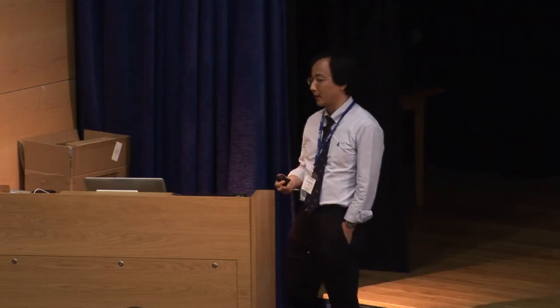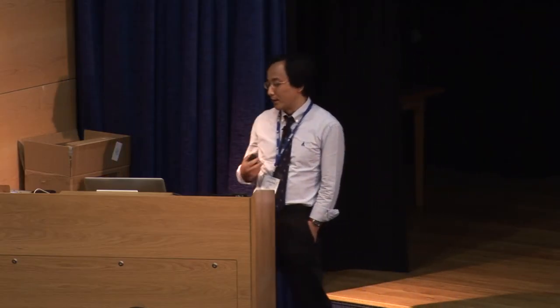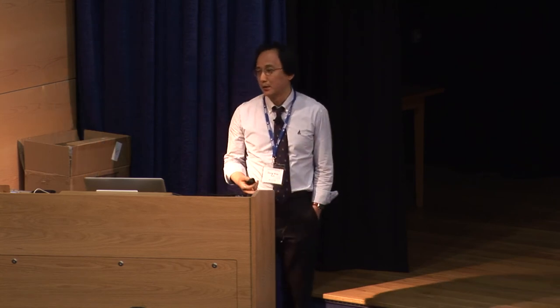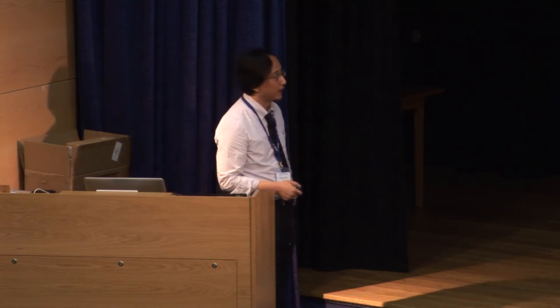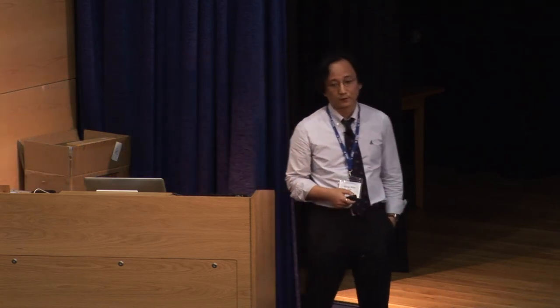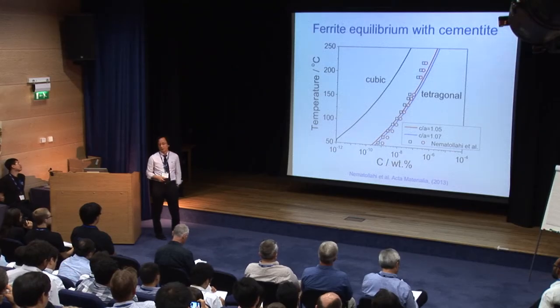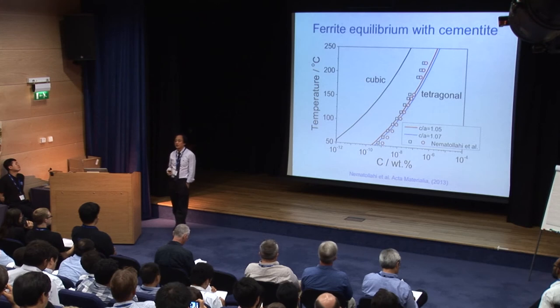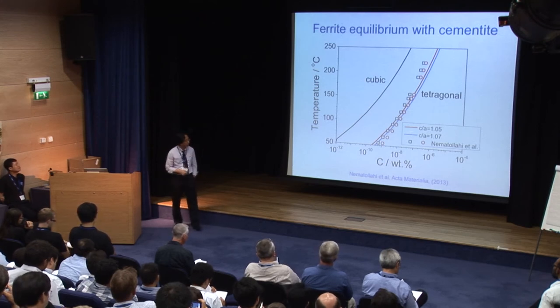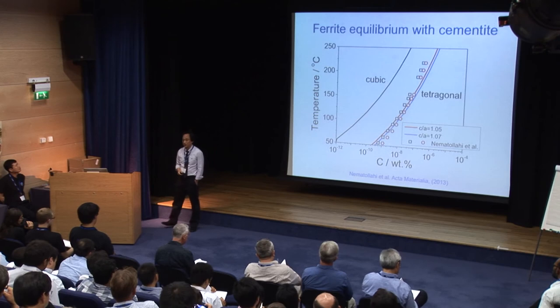Of course, even in this case we must say that the major role for excessive carbon in ferrite comes from the presence of dislocations, but there is some contribution from the structural change of ferrite. Recently, Namato Lai and co-workers performed similar work using first-principles calculations and reported very similar results to ours.